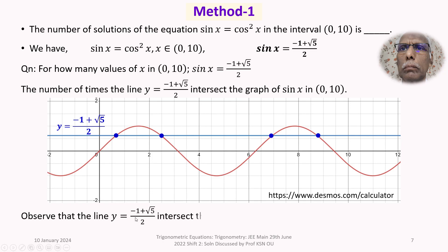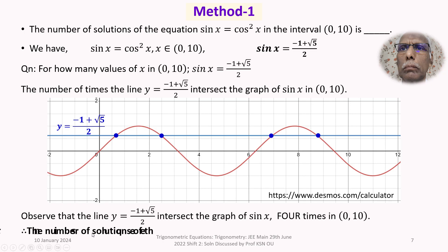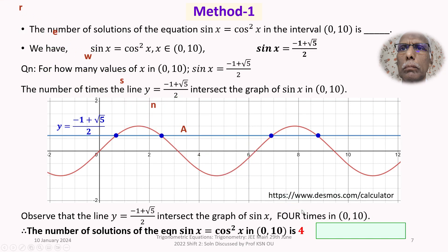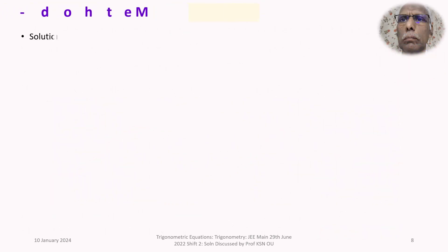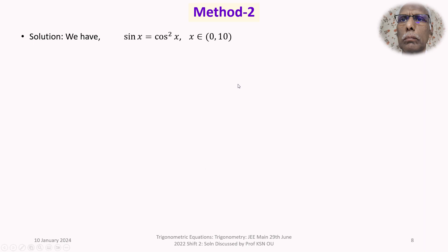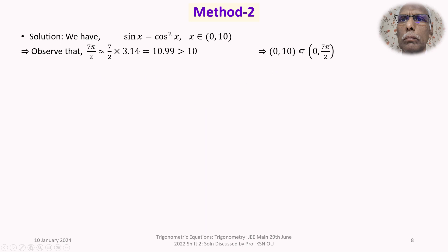The line y = (−1 + √5)/2 intersects the graph of sin x 4 times in the open interval (0, 10), confirming the answer is 4. That completes Method 1. Now I will explain how to get the answer using Method 2. We use the same trigonometric equation, noting that (0, 10) is properly contained in the open interval (0, 7π/2).